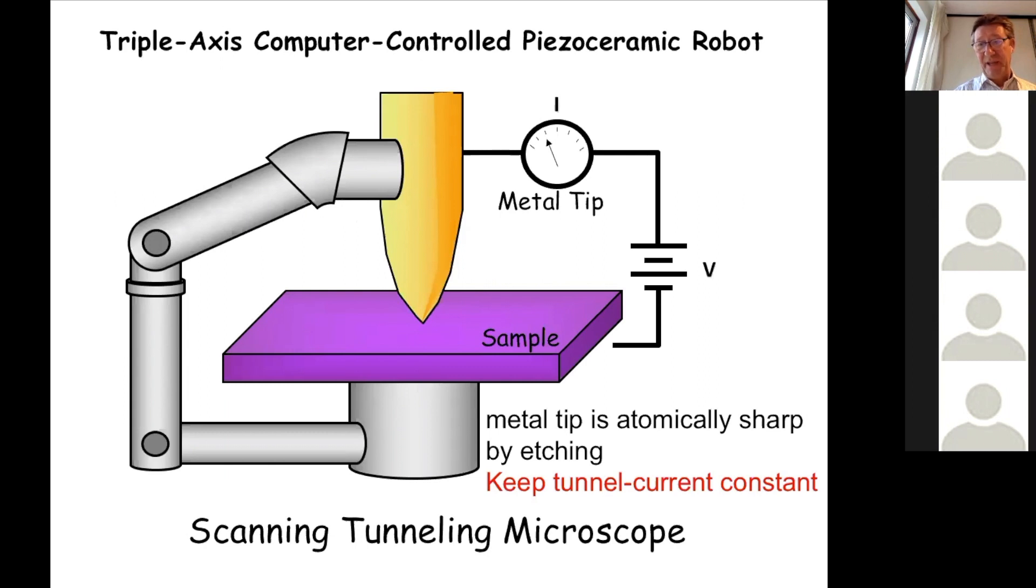So you put a potential between the surface and the tip, and you measure the current. You need conductive materials, and you keep the tunnel current constant. So there's a feedback loop.